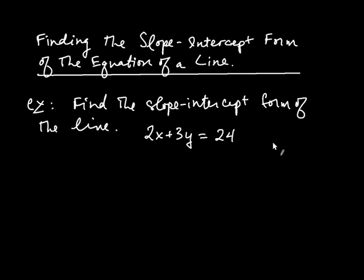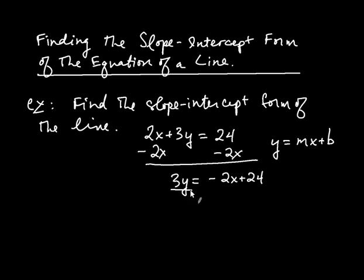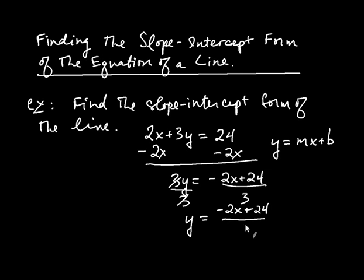Slope-intercept form is y equals mx plus b. So in this problem, it's as easy as getting y by itself. We're first going to subtract 2x from both sides, and that leaves us with 3y equals negative 2x plus 24. And then we can divide both sides by 3, and so we end up with y equals negative 2x plus 24, divided by 3.